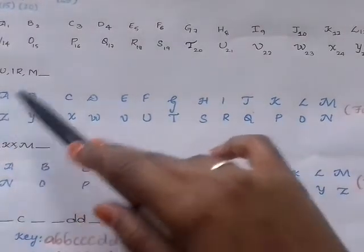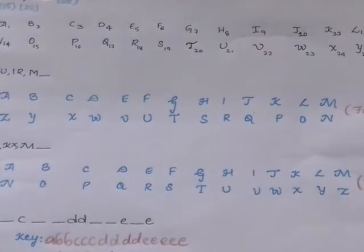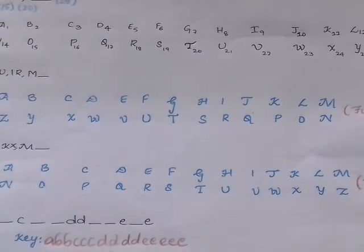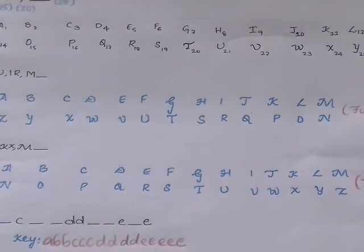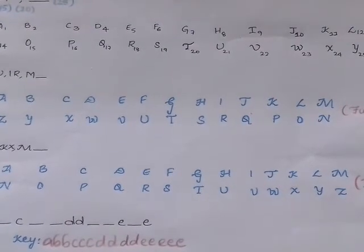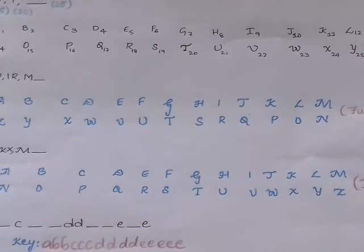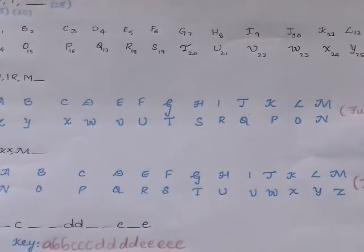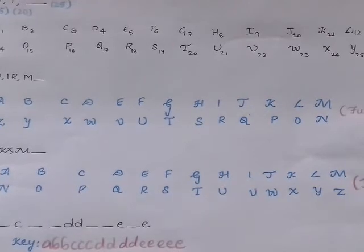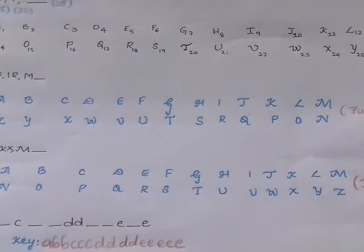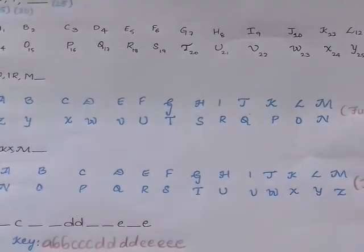They are AZ, A to Z, BY Boy, CX Climax, DW Don't Worry, EV, FU Let us go at the end. GT Good Teacher, HS High School, IR Indian Railways, JQ Jack and Queen and a Pack of Cards, KP Kompali or Kukatpali, LO Let us go at the end, MN Man.